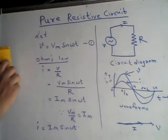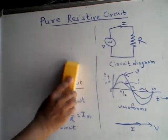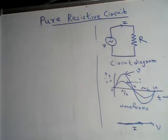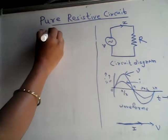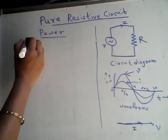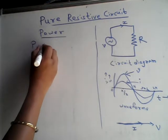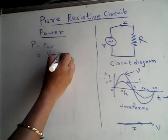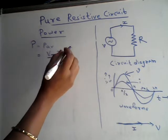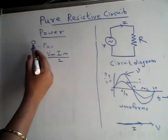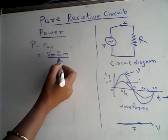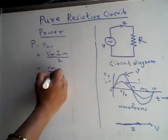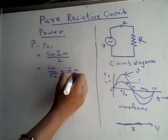Now let us consider the power in a pure resistive circuit. Power is given by P, which is also the average power, and is given by VmIm/2. Since power is the product of voltage and current, this is Vm·Im divided by 2, which can be further split as (Vm/√2)·(Im/√2).